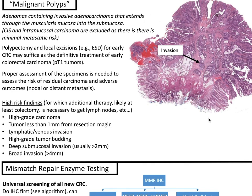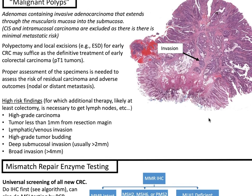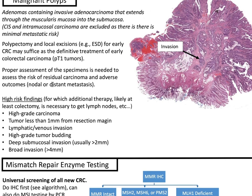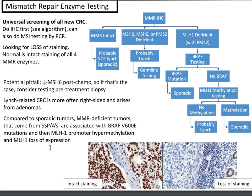Malignant polyps are adenomas containing invasive adenocarcinoma extending through the muscularis mucosa into the submucosa. Carcinoma in situ and intramucosal carcinoma are excluded due to minimal metastatic risk. Polypectomy and local excisions such as endoscopic submucosal dissection (ESD) may suffice as definitive treatment for early colorectal carcinoma (pT1 tumors). High-risk findings requiring additional therapy — likely colectomy to obtain lymph nodes — include high-grade carcinoma, tumor less than 1 mm from resection margin, lymphovascular invasion, high-grade tumor budding, deep submucosal invasion (usually greater than 2 mm), and broad invasion greater than 4 mm.